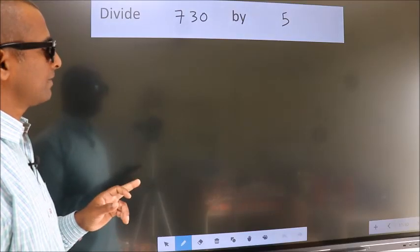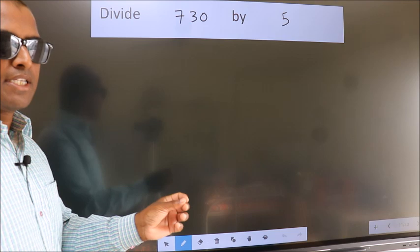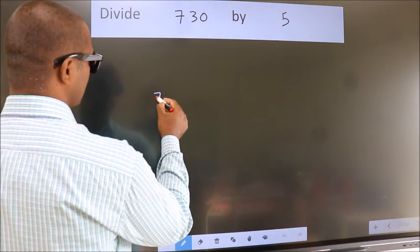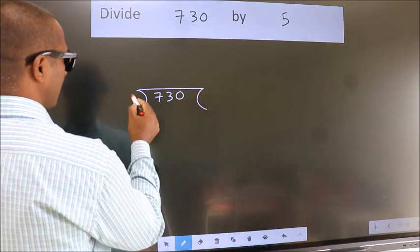Divide 7.30 by 5. To do this division, we should frame it in this way. 7.30 here, 5 here.